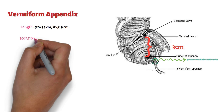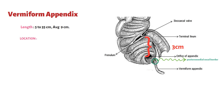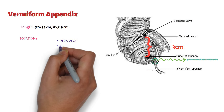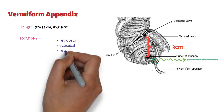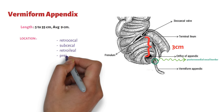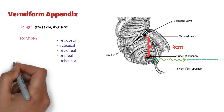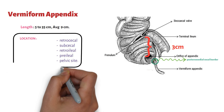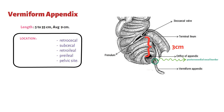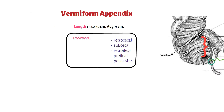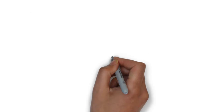The appendix may lie in a retrocecal, subcecal, retroileal, preileal, or pelvic position. This variability in location may greatly influence the clinical presentation in a patient with appendicitis, which we will discuss in a subsequent lecture.